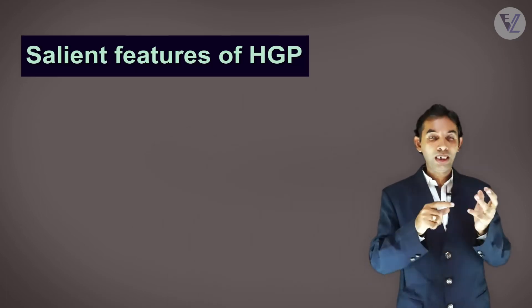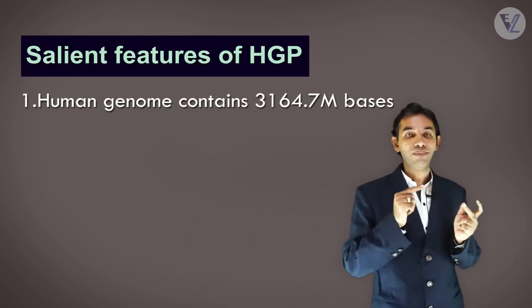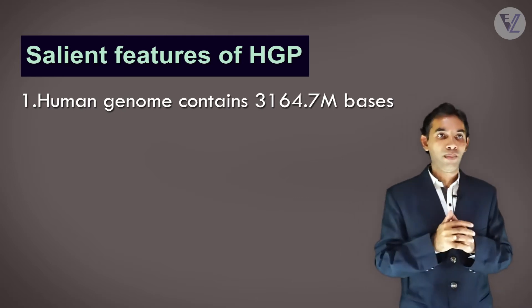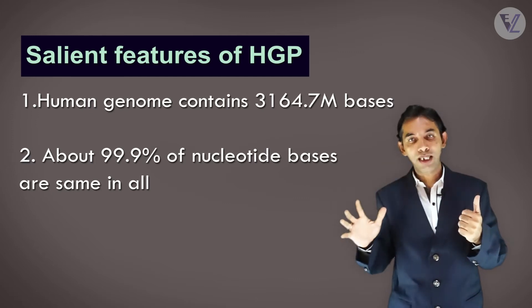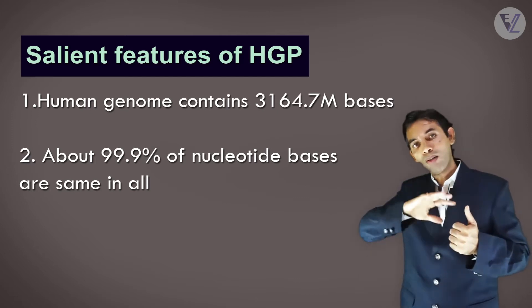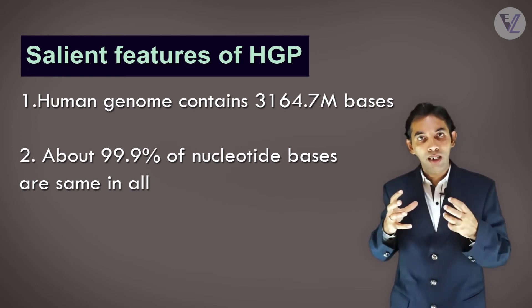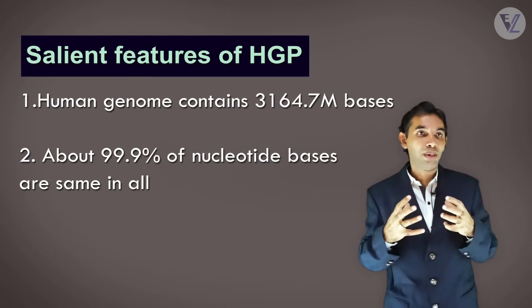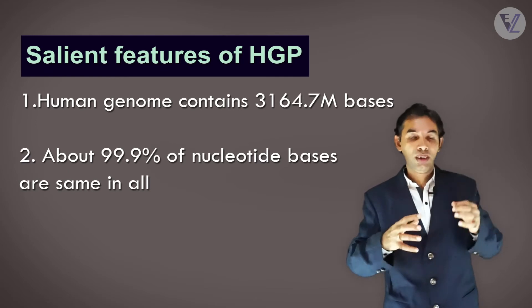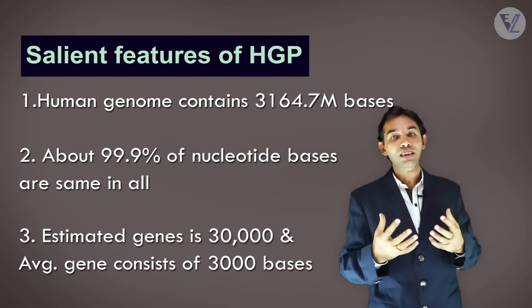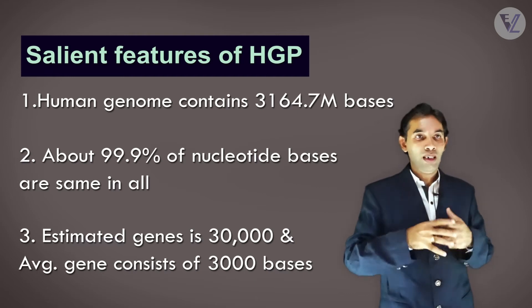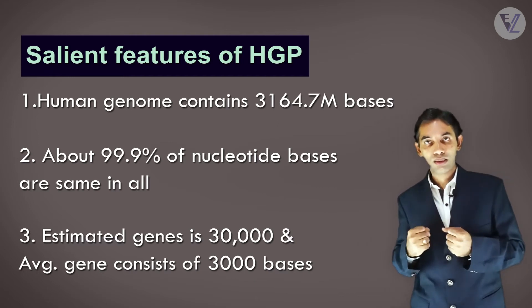Now the salient features, which are the outcomes or results of the Human Genome Project. It was found that the human genome contains 3,164.7 million bases. Second, about 99.9% of the bases are exactly the same in all people — meaning we as Homo sapiens share a similar set of nucleotide bases at 99.9%. Third, the total number of estimated genes was about 30,000.